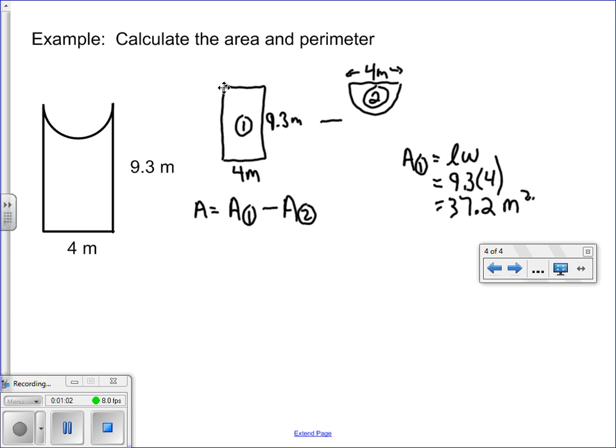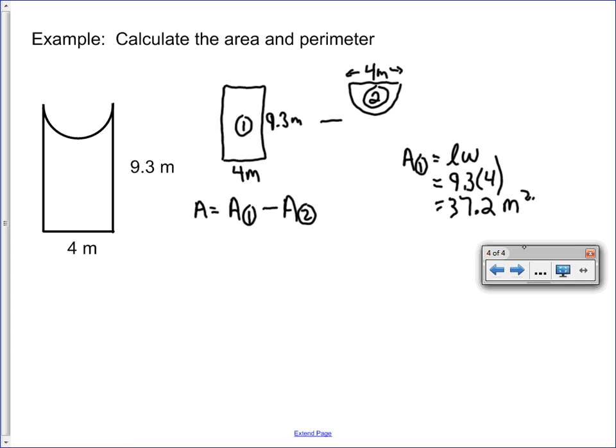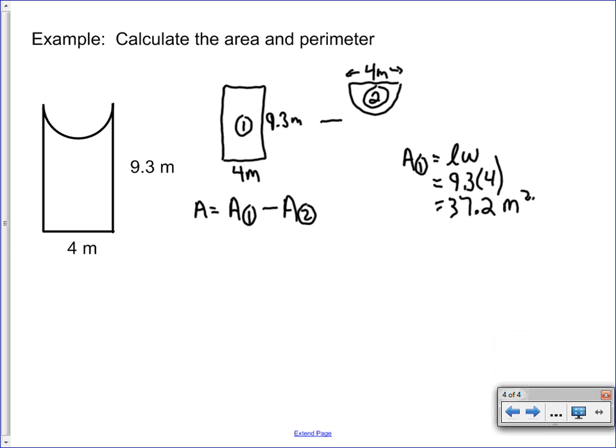Now, shape 2 is a semicircle. So we know that typically the area of a circle is pi r squared. But in this case, we only have half of the circle, so we're going to divide that by 2. Also, we need to find the radius. We've been given that the diameter is 4, and the radius is half of the diameter, which would be 2.